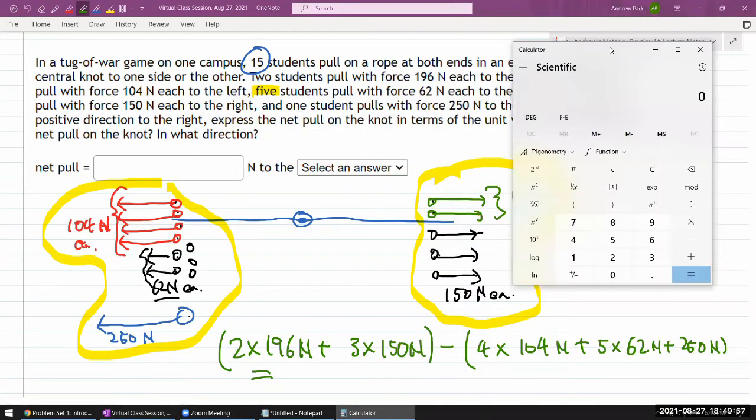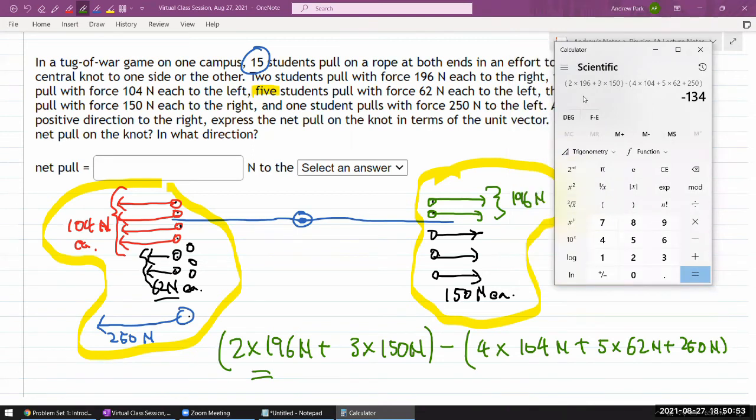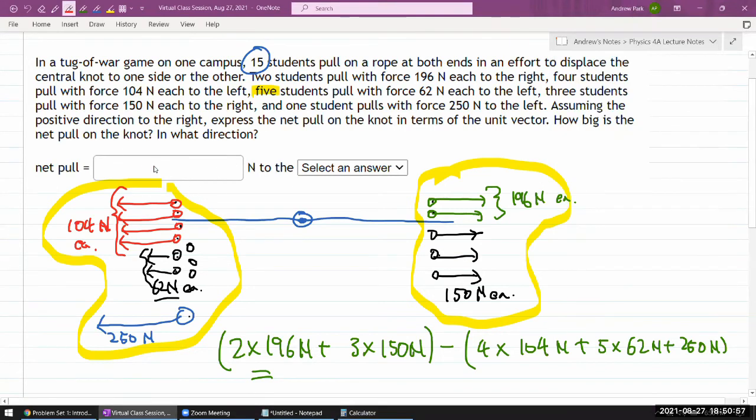So I have, oops, that's too big. So I'm going to just enter parenthesis, two times 196 newton, plus three times 150 newton, parenthesis close, minus, parenthesis open, four times 104 newton, plus five times 62 newton, plus 250 newton. And make sure the input looks right, and you should always be reasonably familiar with the calculators that you are using. And I think in one of the recorded videos, I demonstrated Wolfram Alpha, which is a good calculator to use. If you are getting some errors, and you feel like it might be a calculator error, then Wolfram Alpha gives you a more intuitive, or it gives you an interface that's usually better than a lot of scientific calculators. So, okay, so the answer I get here is minus 134 newtons, but you do have to be a little bit careful when you are entering it.